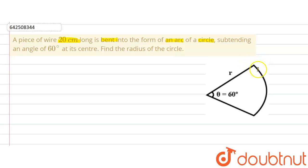So a wire was there and the length of the wire is 20 cm. It was bent in the form of an arc subtending an angle of 60 degrees at its center.